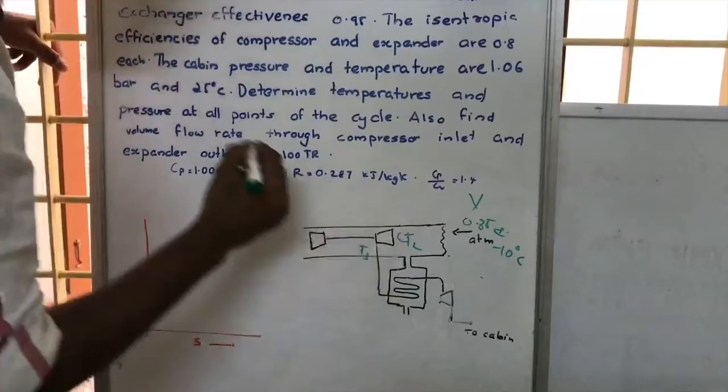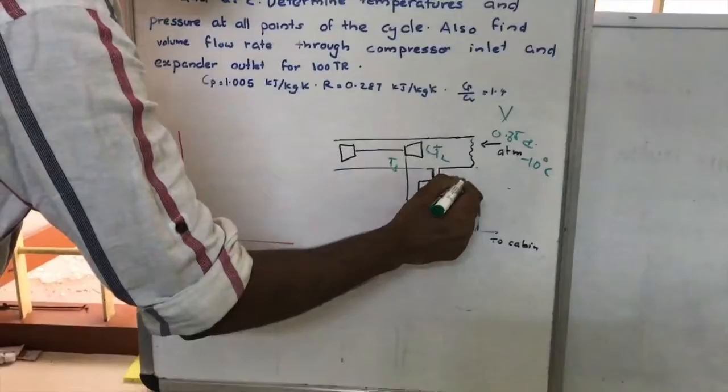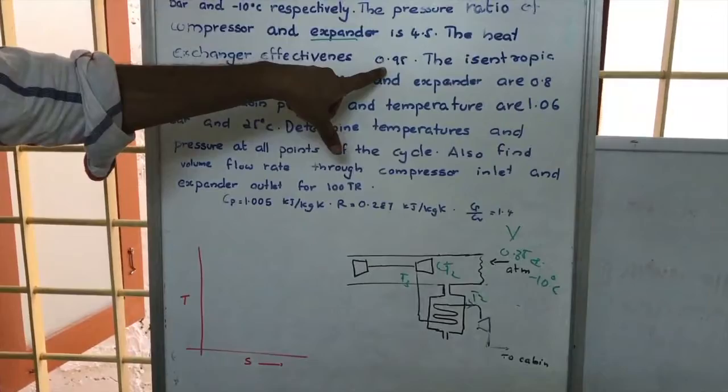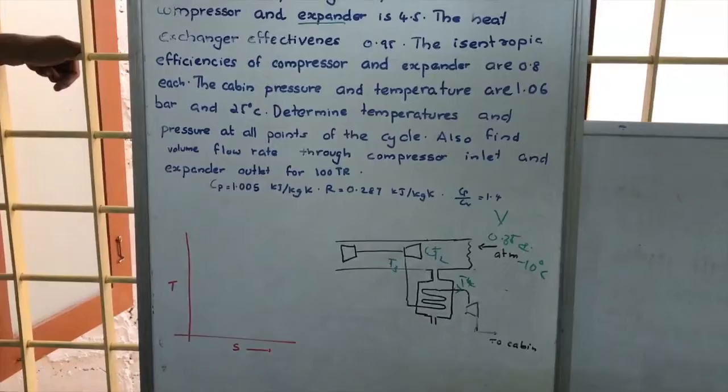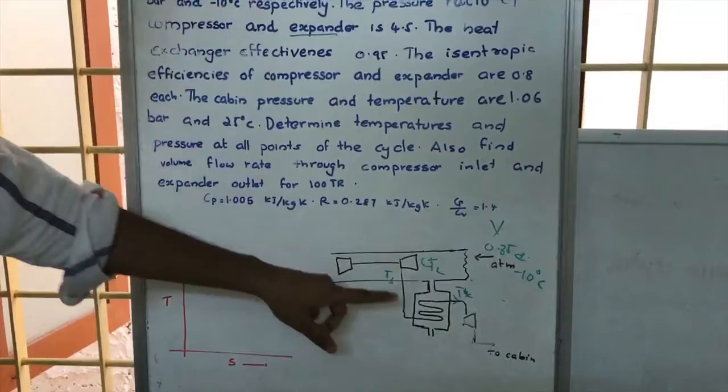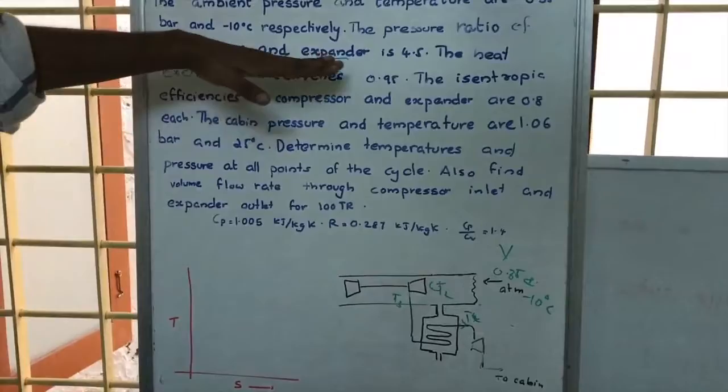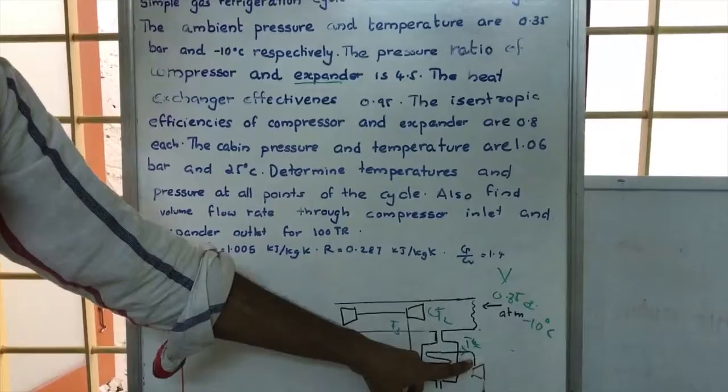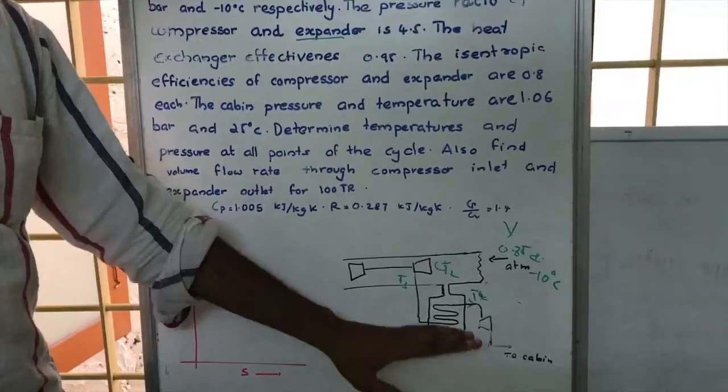If the temperature entering the heat exchanger is T3 and the exit temperature is T4, we want to reduce T3 back to T2. But since exchanger effectiveness is 0.95, we will get some temperature T4 slightly above T2. After the heat exchanger, the air is fed through the turbine (expander) with a pressure ratio of 4.5 — expanding the pressure to 1/4.5 times.